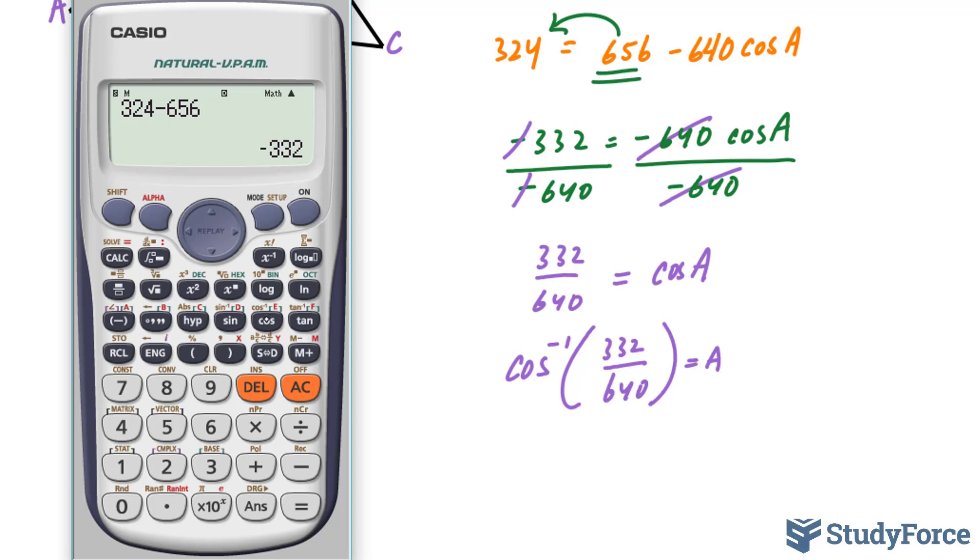Let me show you. So inverse cosine, 332 over 640. And this gives us an exact angle of 58.75°.